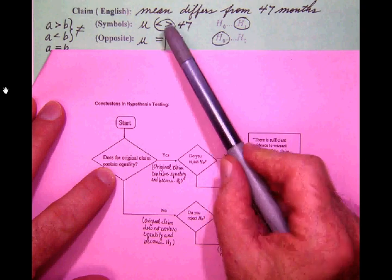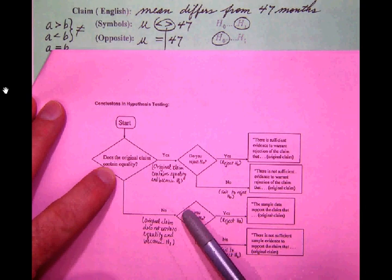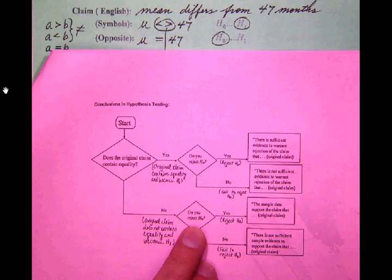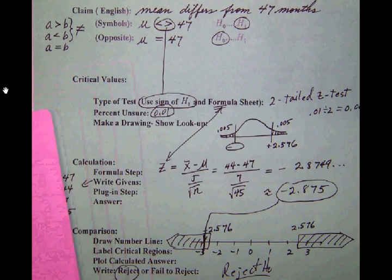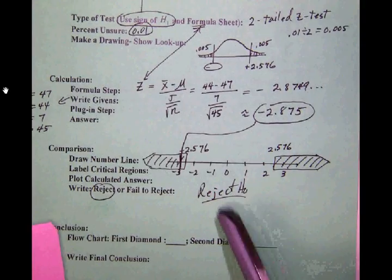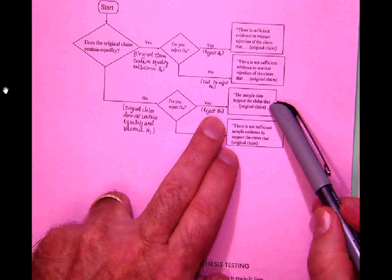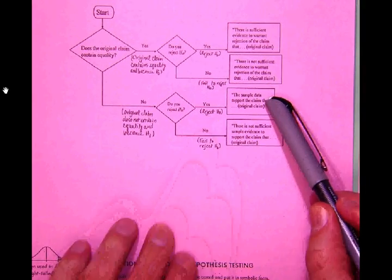Okay so the first answer is no. So our first diamond is no and then did we reject? And as we saw over here we did in fact reject. So we're going to have the no followed by the yes and so we end up in the third box.